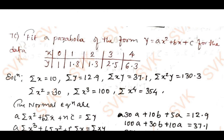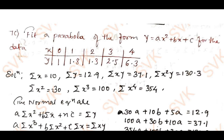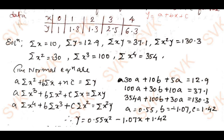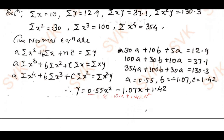Going with the next problem: in the given question paper, instead of ax²+bx+c they have provided a+bx+c. The equation you need to write is 0.55 − 1.07x + 1.42x², and in this manner you are going to get the solution.